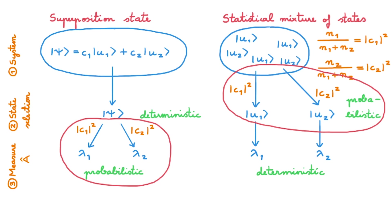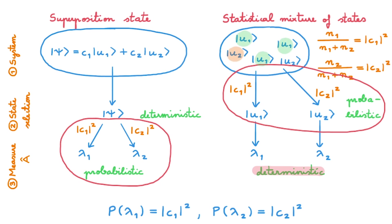The second step is to select a state. What we now do is pick one state at random from this collection: we may get u1 with probability |c1|², or we may get u2 with probability |c2|². So in a statistical mixture of states, the state-selection step is probabilistic. Finally, the measurement step: since both u1 and u2 are eigenstates of the operator A we're measuring, we know with certainty what the result will be — if we have u1 the result is lambda_1, and if we have u2 the result is lambda_2. This step is therefore deterministic.